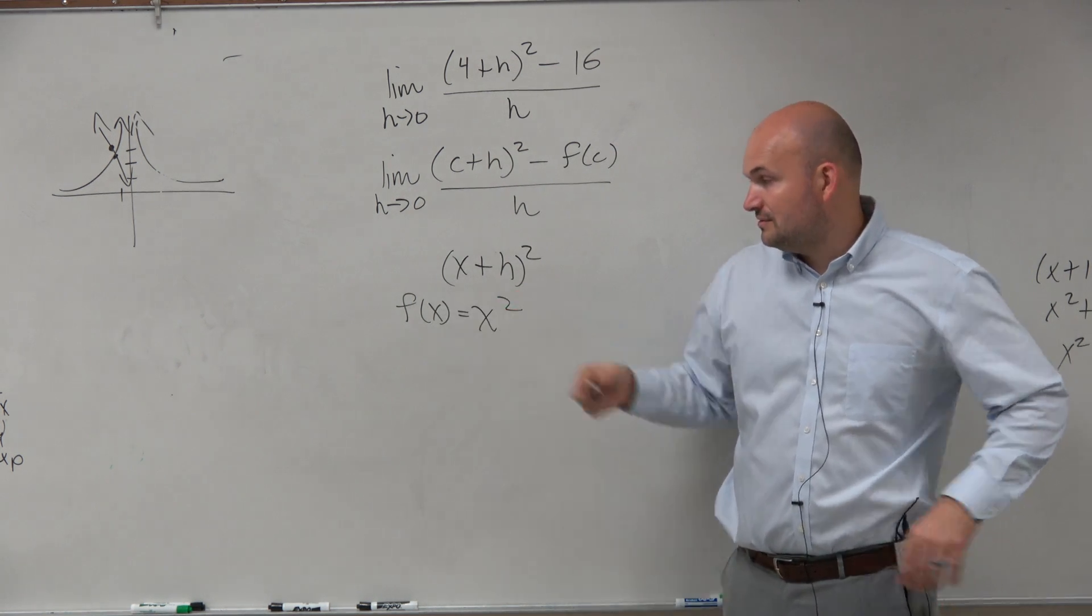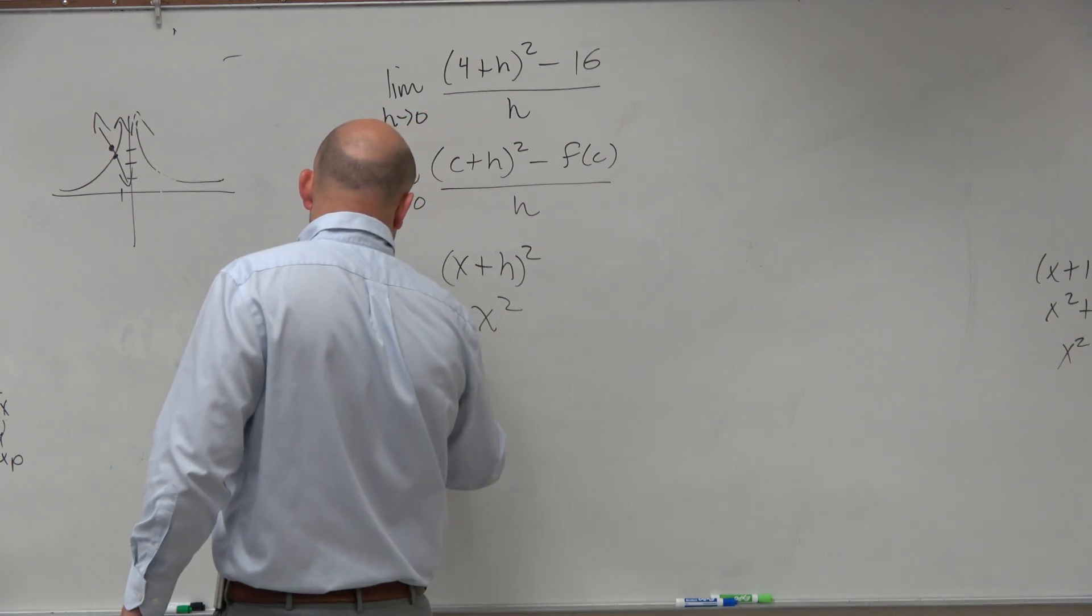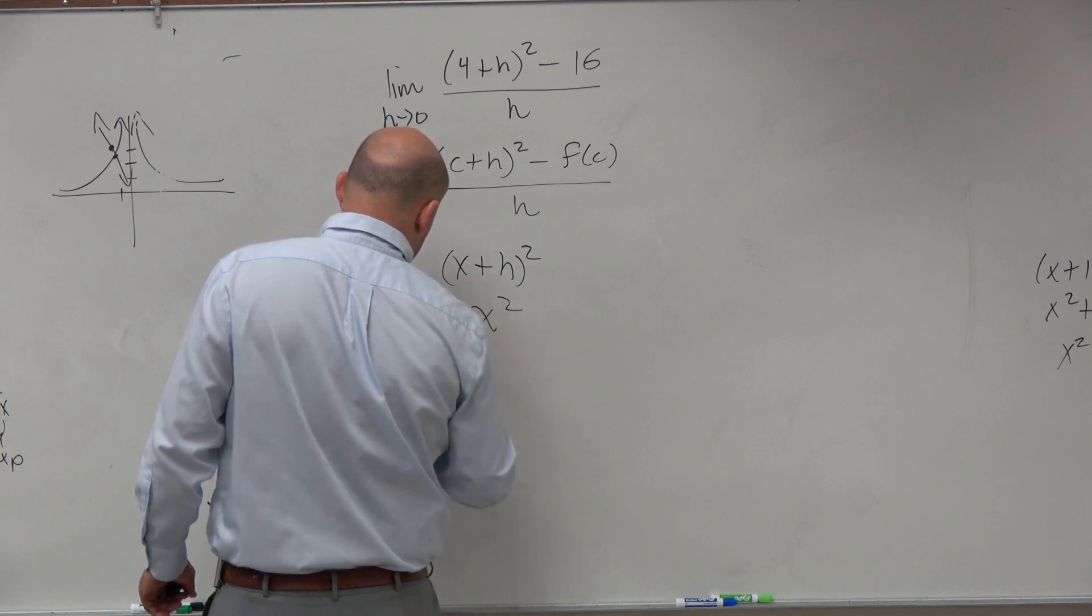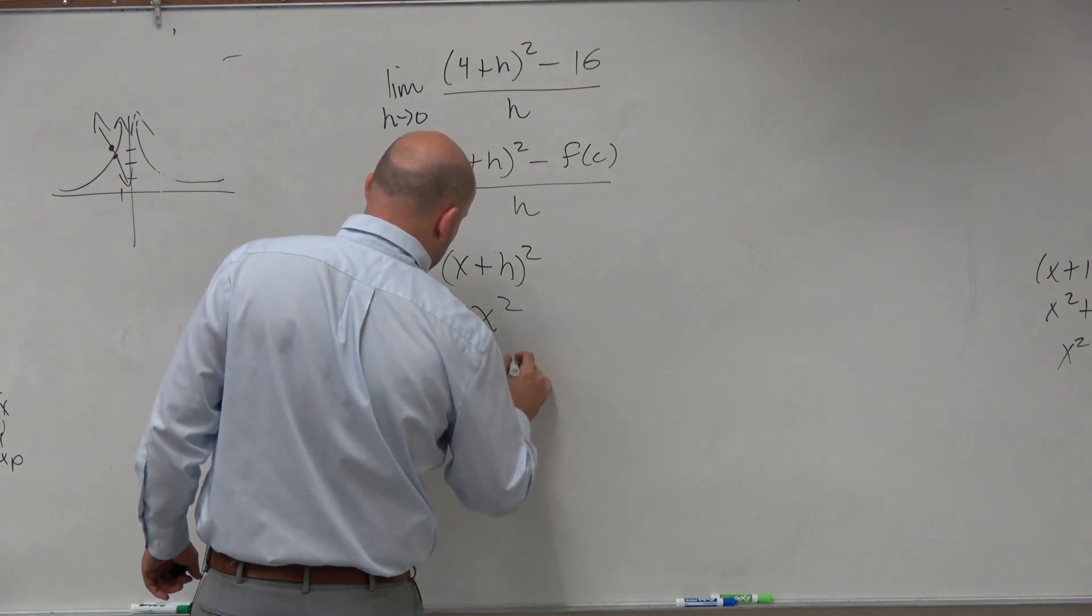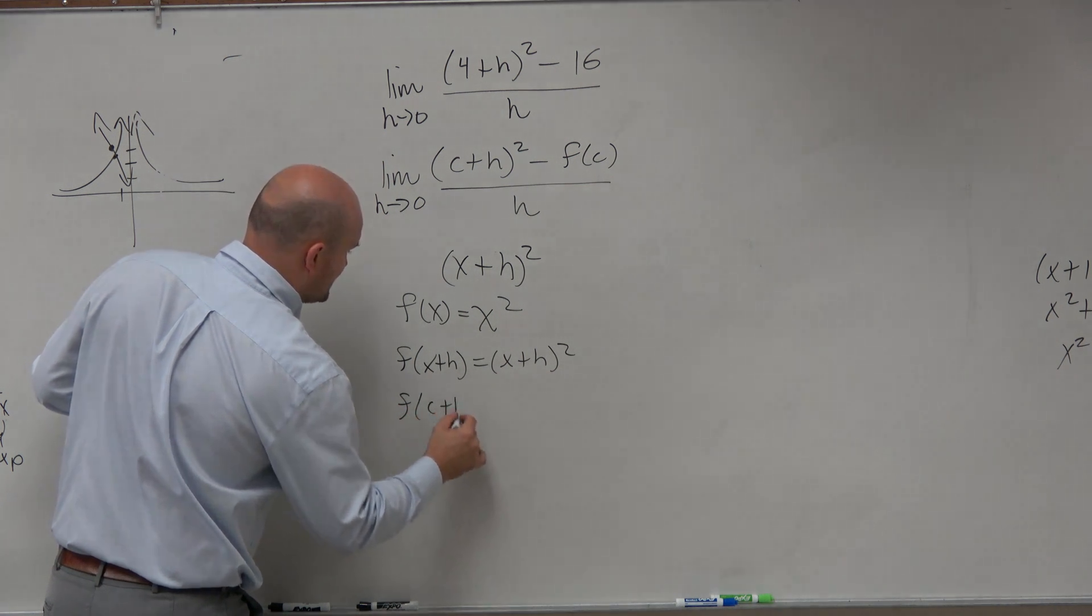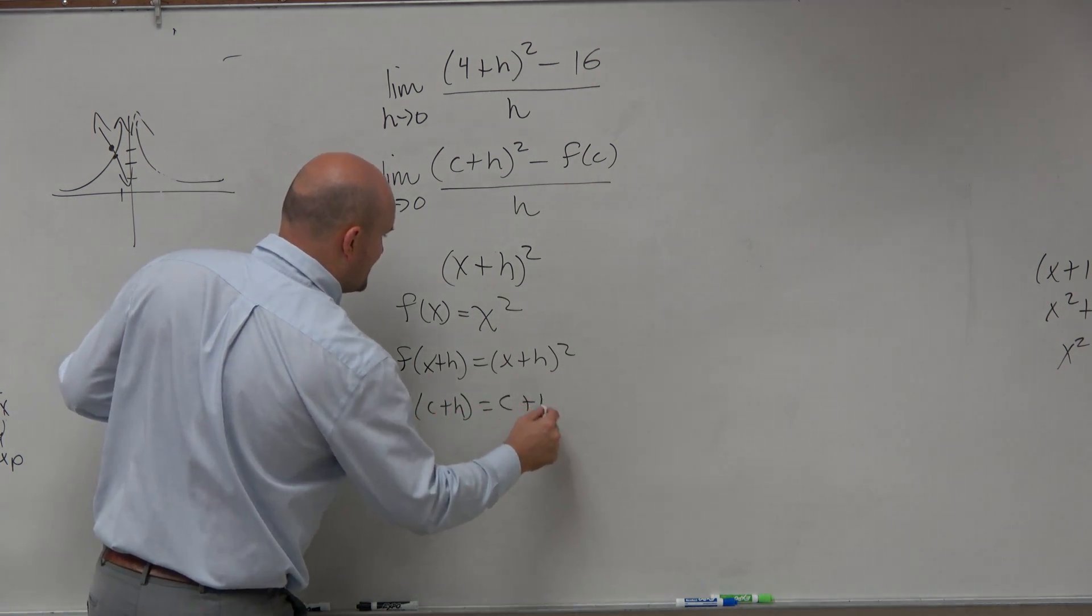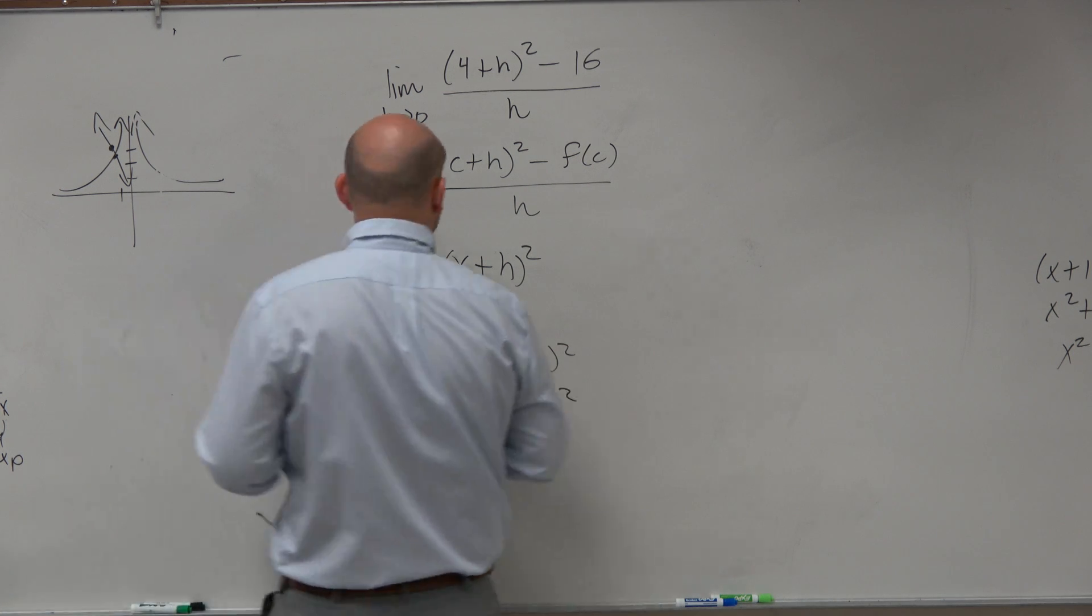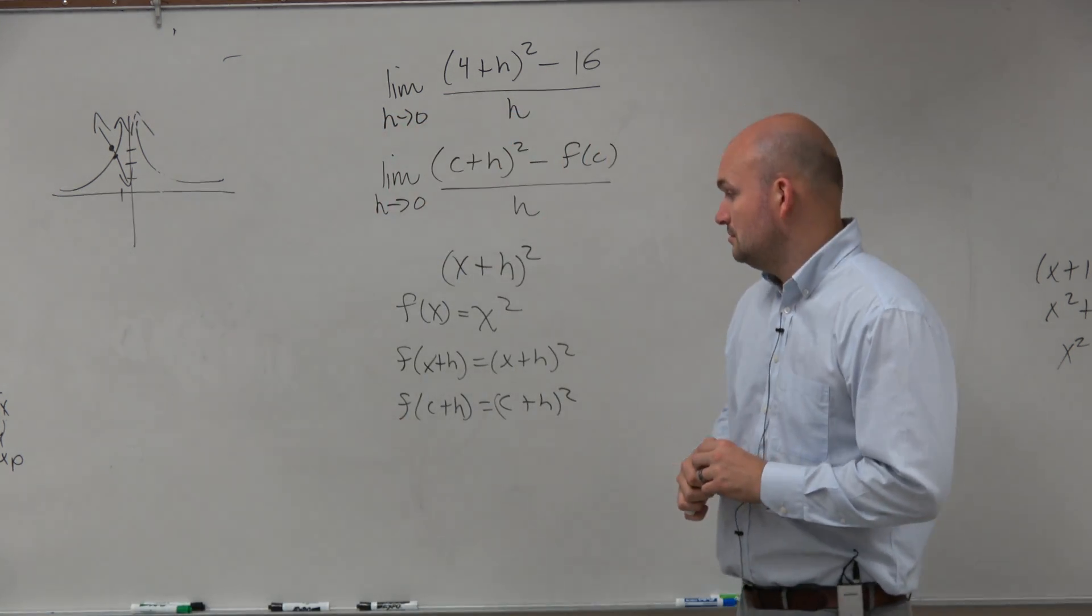If you have, if you do F of X plus H, that looks like this. If I do F of C plus H, then that gives me C plus H squared. Right?